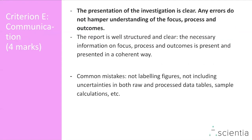The last criterion is criterion E, communication, worth four marks. This criterion is all about formatting and structure of your IA, which depends on following what your teacher wants. It also revolves around labeling your figures and uncertainty propagation. Common mistakes that cost students marks include not labeling figures, not including uncertainties in both raw and processed data tables, not including error bars, not including sample calculations, and missing page numbers — so watch out for those when submitting your work.